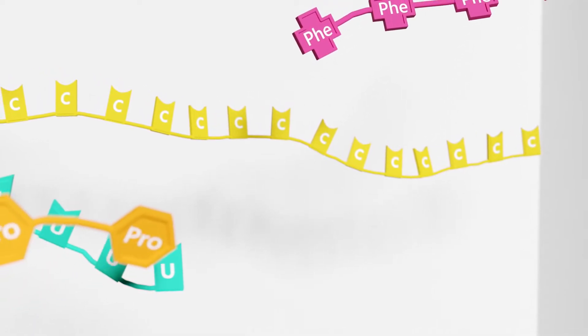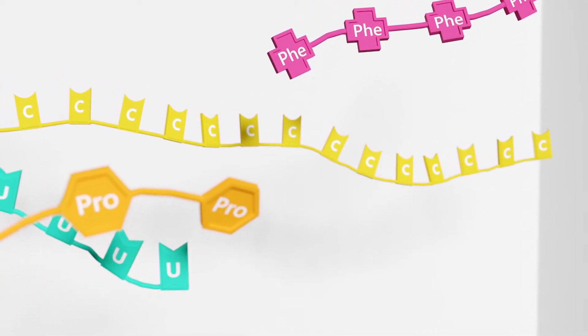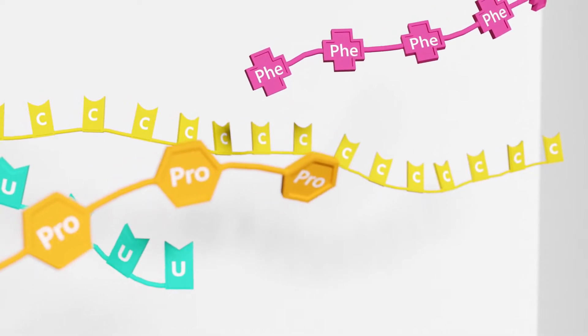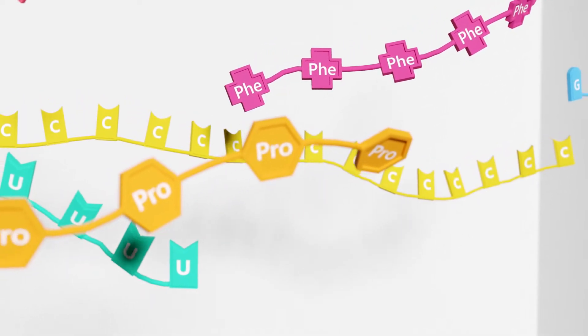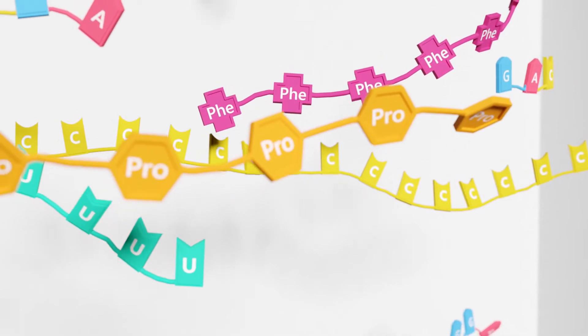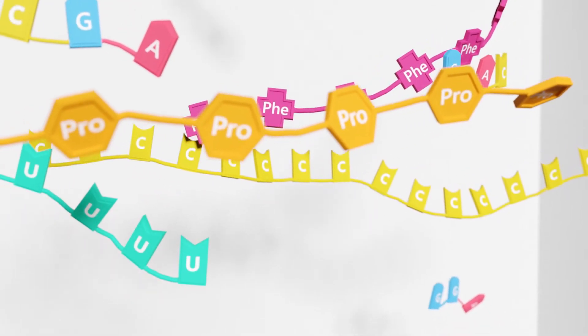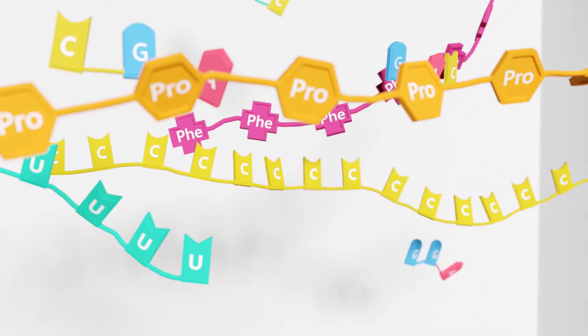It became apparent that specific combinations of RNA bases encoded for amino acids. Having established nucleotides were read in triplets, Nuremberg and his team began synthesizing and testing all 61 possible trinucleotide permutations for the amino acids they encoded.